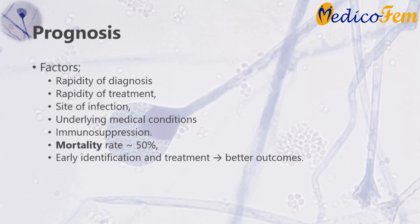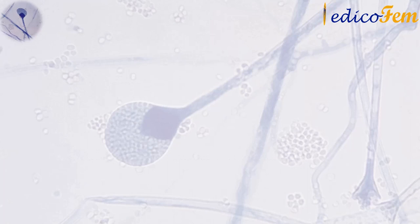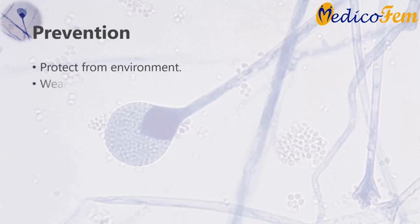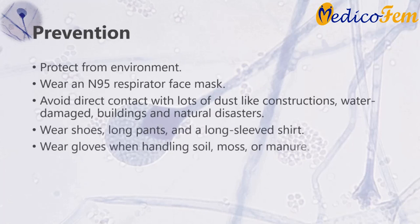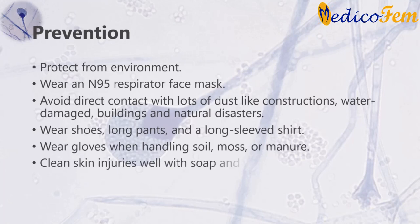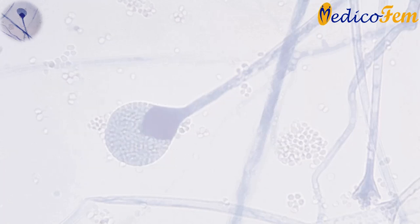Prevention: Protect yourself from the environment. It's important to note that although these actions are recommended, they haven't been proven to prevent mucormycosis. Wear an N95 respirator face mask, avoid direct contact with lots of dust like construction sites, water-damaged buildings, and natural disasters. Wear shoes, long pants, and a long-sleeved shirt when doing outdoor activities. Wear gloves when handling materials such as soil, moss, or manure. Clean skin injuries well with soap and water, especially if they have been exposed to soil or dust.